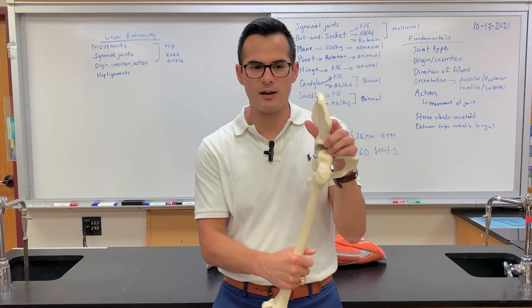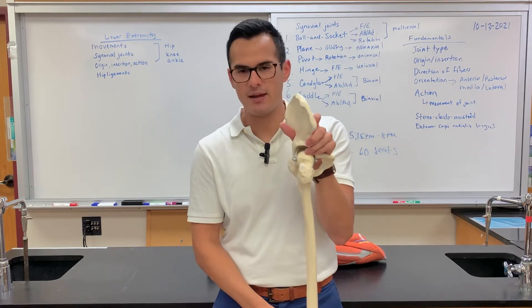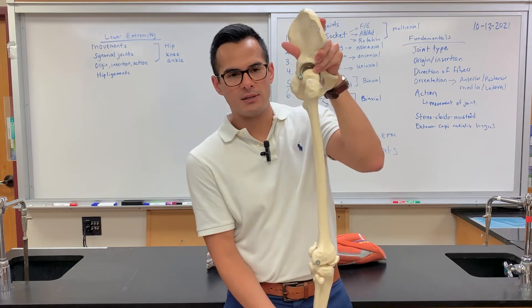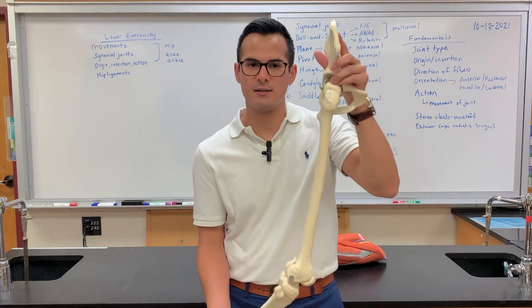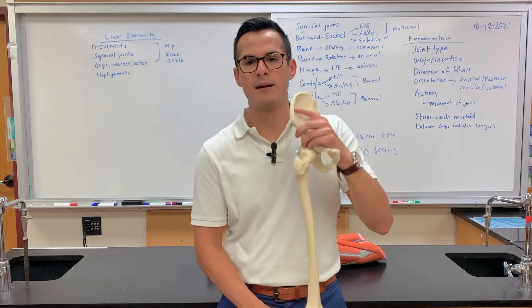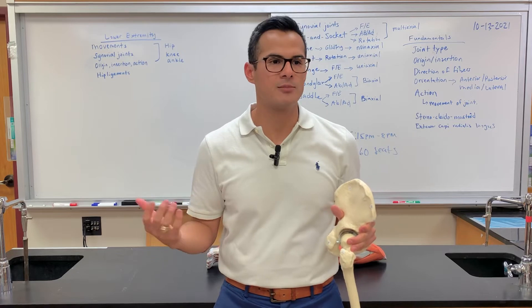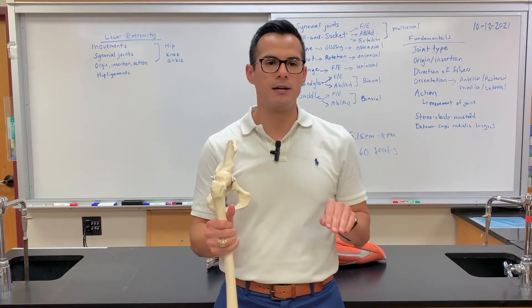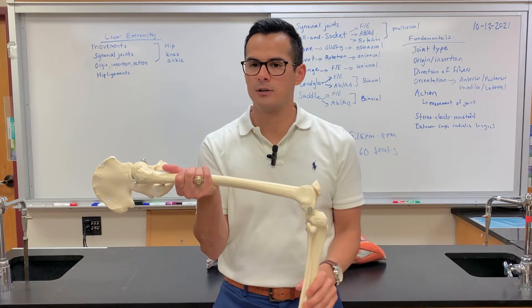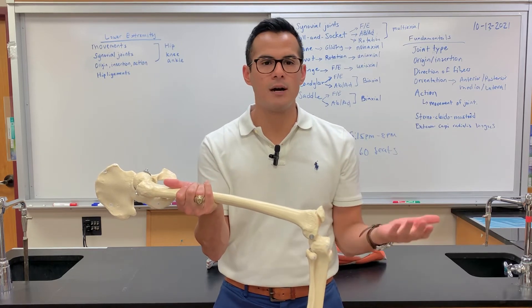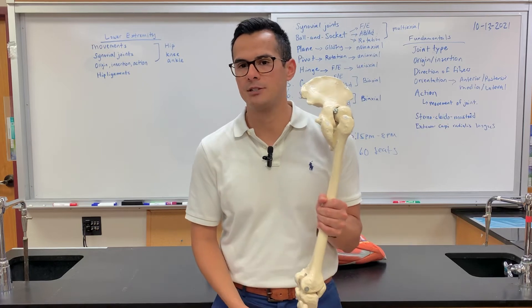All of these hamstring muscles help to extend the hip, but since they also attach below the knee, they additionally flex the knee. Think of hamstring curls at the gym — laying flat and bringing it back. For knee extension, you target the quadriceps, like when you sit and kick your knee out. If you're laying on your stomach doing knee flexion curls, you're targeting the hamstrings.